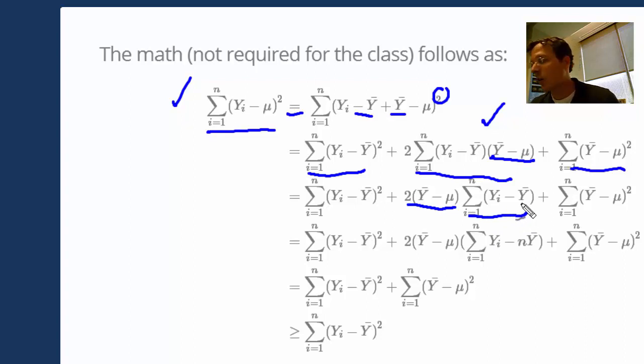I can distribute the sum across it. So I get summation y_i, and then if I add up y bar, which doesn't depend on i, if I add it up n times, I get n times y bar.